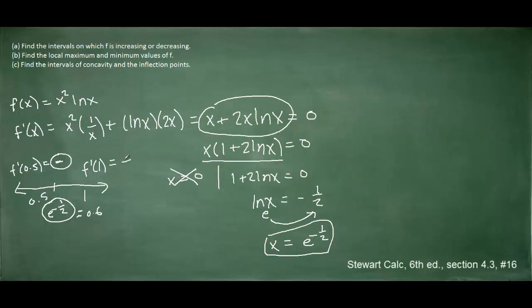When the derivative is negative, that tells us that the function is decreasing. When the derivative is positive, that tells us that the function is increasing. And so we are able to determine the intervals on which this function is increasing or decreasing by looking at our number line.